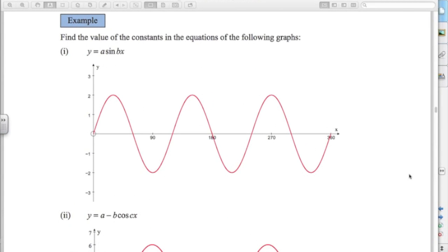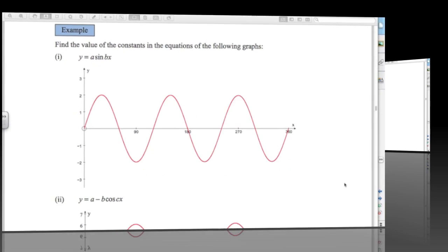So what's the equation of this graph? a sin bx. Okay, so the amplitude is 2. It's going between 2 and minus 2, so I know a is 2. It's repeating once, twice, 3 times in 360, so b must be 3. So this is the graph of 2 sin 3x.